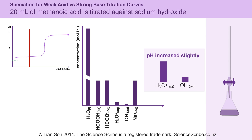You can also see from the titration curve that the pH slightly increased. All that means is that my hydronium ion concentration decreased and my hydroxide ion concentration in the flask has increased. But since the solution overall is still below pH 7, it's still acidic, meaning my hydronium ion concentration is still slightly higher than my hydroxide ion concentration.